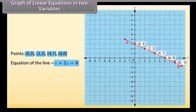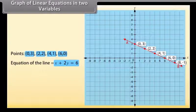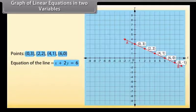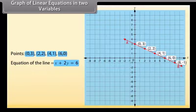This is called the graph of the linear equation. To obtain the graph of a linear equation in two variables, it is enough to plot two points corresponding to two solutions and join them by a line.